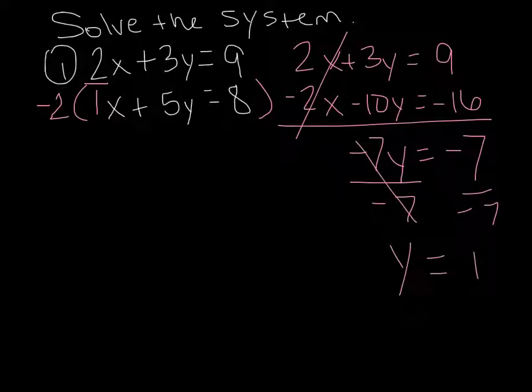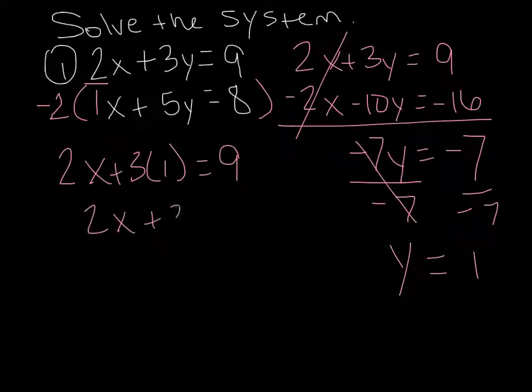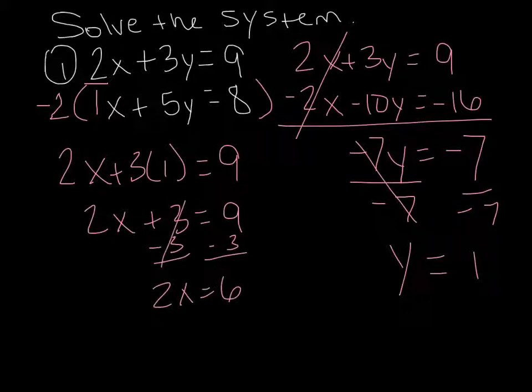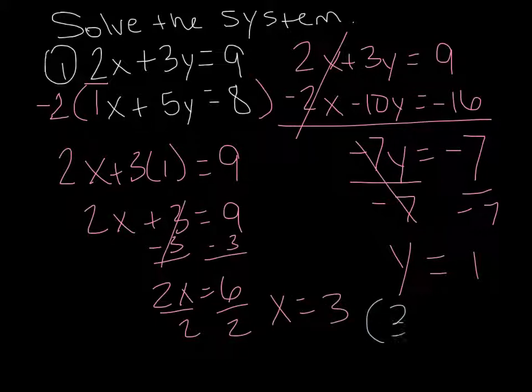So then you're going to take that y, that's 1, and plug it back in. So you have 2x plus 3 times 1 equals 9. So 2x plus 3 equals 9. Subtract 3 from both sides. So 2x equals 6, divide by 2. So x equals 3. So we have x equals 3, y equals 1, so my final answer is 3, 1. Make sure to write it as a point.